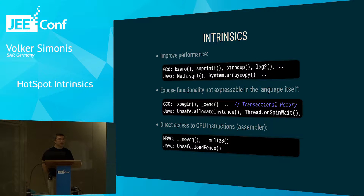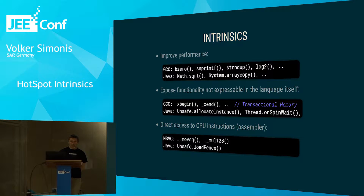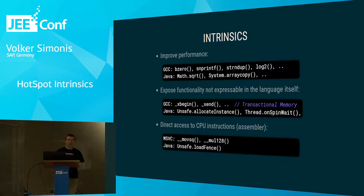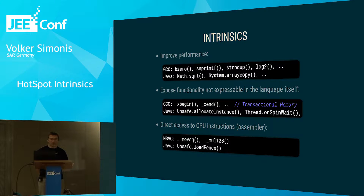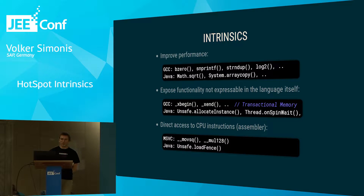For example, transactional memory — there is no means of using transactional memory from C++, but GCC has functions like xbegin and xend, which mark a transaction and translate to the corresponding machine instructions, so you can use the transactional memory functionality of new Intel CPUs from within C.